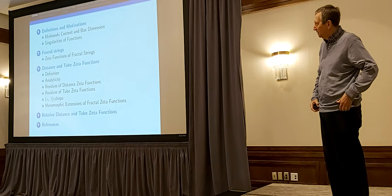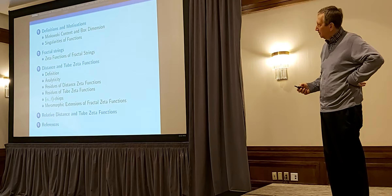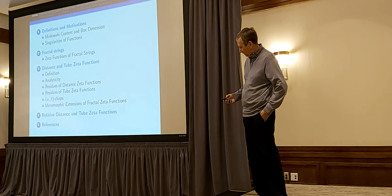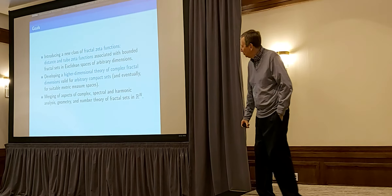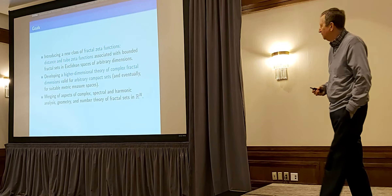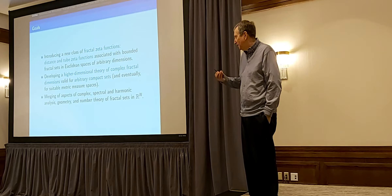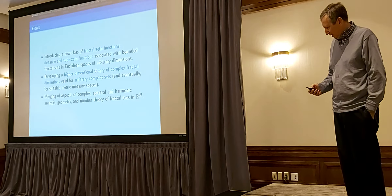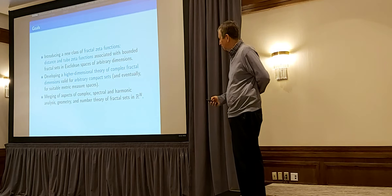There are two notions — the distance and tube zeta functions — which give you more or less the same information; sometimes it's more convenient to work with one or the other. There is also the notion of relative fractal drums. And there are many relations between various areas of mathematics: mathematical physics, harmonic analysis, spectral geometry, number theory, and zeta functions everywhere. Also complex analysis, and I'm thinking of several complex variables.